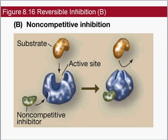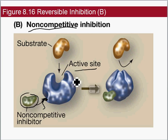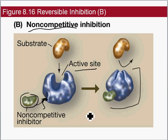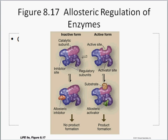The second type of reversible inhibition is non-competitive inhibition. Here we're not competing for the active site — hence non-competitive. An inhibitor binds to a different location called a control region. When it does, it causes the enzyme to change shape. Once the non-competitive inhibitor binds elsewhere, the enzyme changes shape and the substrate can no longer bind. The inhibitor and substrate are not competing for the active site; the inhibitor binds somewhere else, the enzyme changes shape, and the reaction is inhibited.